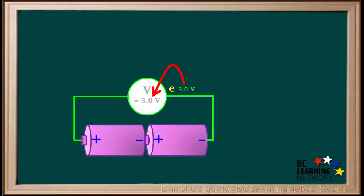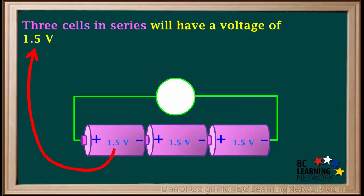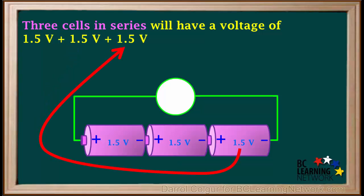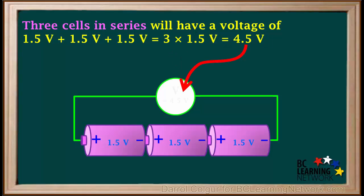Therefore, the voltage on the voltmeter is 3 volts. Three 1.5 volt cells in series will have a total voltage of 1.5 plus 1.5 plus 1.5, or 3 times 1.5, which is equal to 4.5 volts.